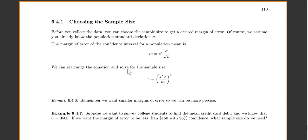We can rearrange this equation and solve for our sample size. So n would be z star, our critical point, times sigma over our desired margin of error, squared. Remember, we want small margins of error so we can be more precise. So we want bigger sample sizes to get small margins of error.